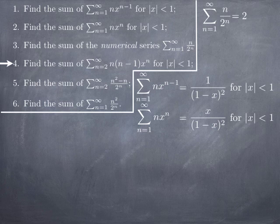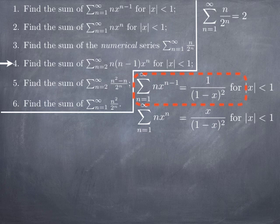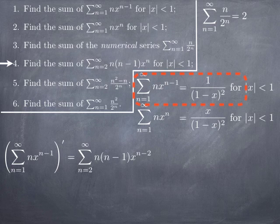In question 4, we want to find the sum of the series starting at 2 of n(n-1)·x^n. The factor n(n-1) suggests taking a derivative: if we differentiate the series of general term n·x^(n-1), we get n(n-1)·x^(n-2). The reason we start at 2 is that when n = 1, differentiating the constant term makes it disappear.